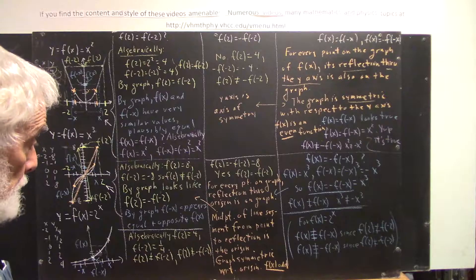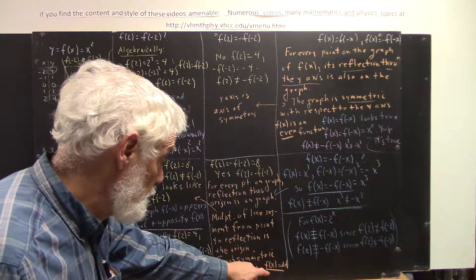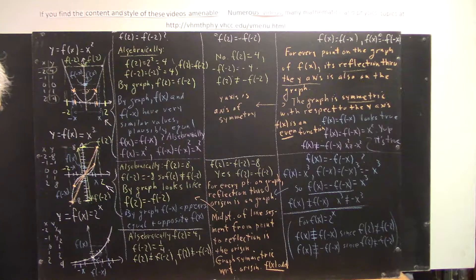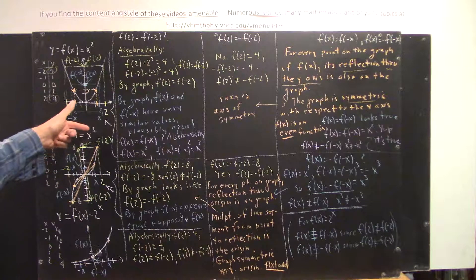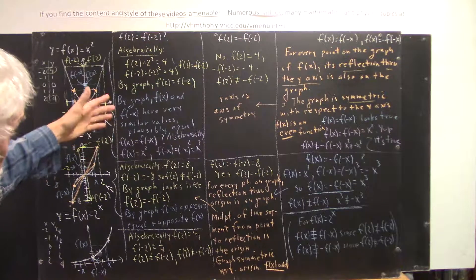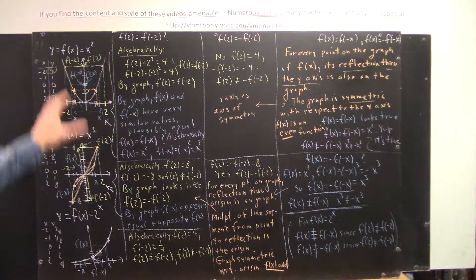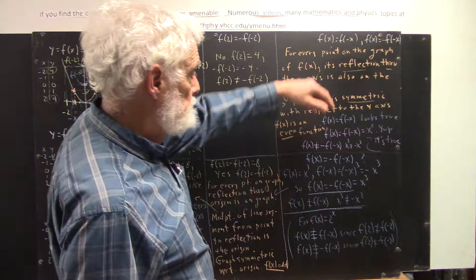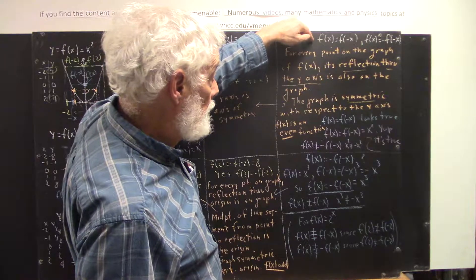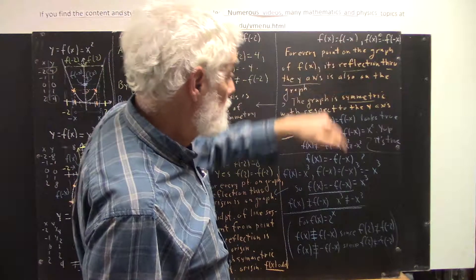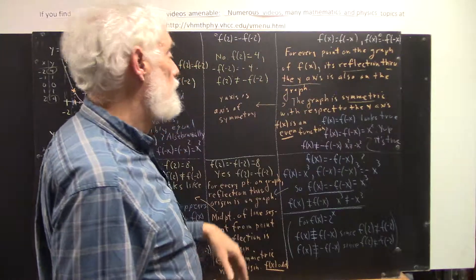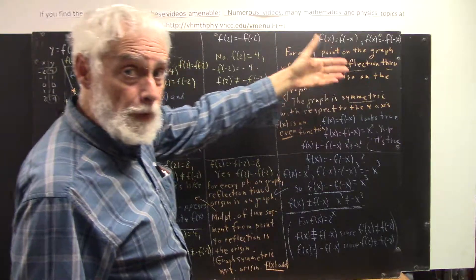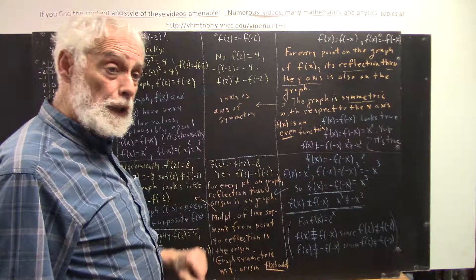Another equivalent statement is that this function — f(x), the x-cubing function — is odd. This corresponds to the fact that if it's a power function with an odd power, you're going to have this property. If it's an even power, you have symmetry with respect to the y-axis. If it's an odd power, you have symmetry with respect to the origin. So, the fundamental idea is: if f(x) is always equal to f(-x), all these things hold — you have symmetry with respect to the y-axis, you have an even function, every point in the graph has its reflection through the y-axis, and the y-axis is the axis of symmetry.